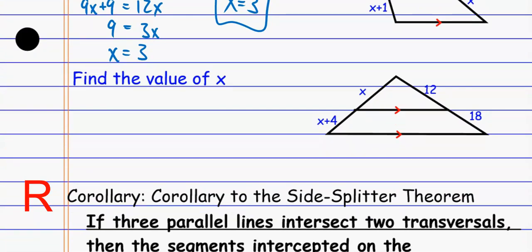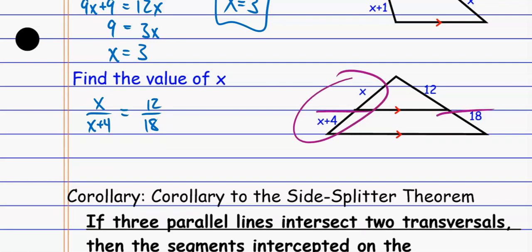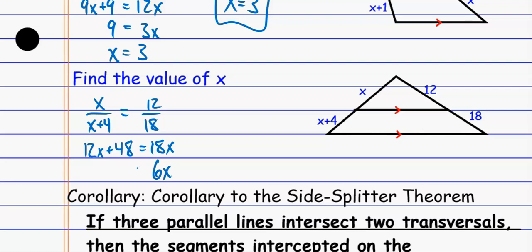If I look at this one — find the value of X. Again, that parallel line is going to cut those sides, splitting them proportionally, which means X over (X + 4) must equal 12 over 18. I cross multiply: that's 12X + 48 = 18X. I subtract 12X from each side and divide by 6, and I get X = 8. One thing I could have done beforehand: reduce the fraction 12 over 18 — each is divisible by 6 — to get 2 over 3. That makes the numbers a little bit smaller and easier to deal with. You get the same thing either way.